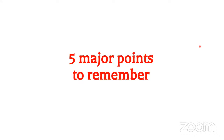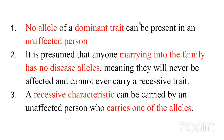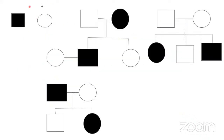From an exam point of view, we need to remember five things when identifying a pedigree chart. Point number one: for any gene or trait, there are two alleles. If it is a dominant trait, even one dominant allele means the person will be affected. So no dominant allele can be present in an unaffected person. If a person is completely normal, both their alleles are normal and they carry no dominant disease allele.